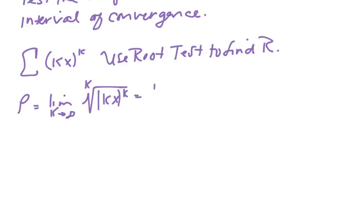And so this is simply the limit as k goes to infinity of the absolute value of kx, which I'm going to pull the x outside in front of the limit sign, leaves us with the limit as k goes to infinity of k, which obviously is going to equal infinity.